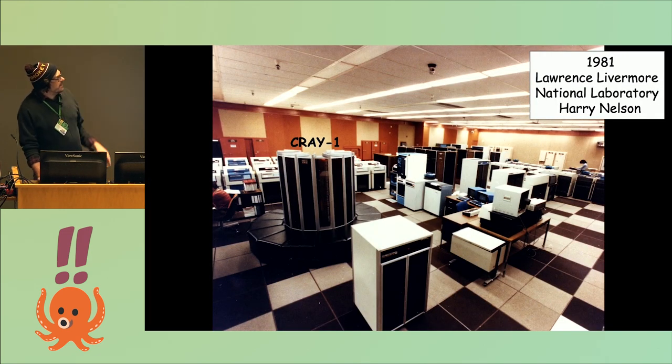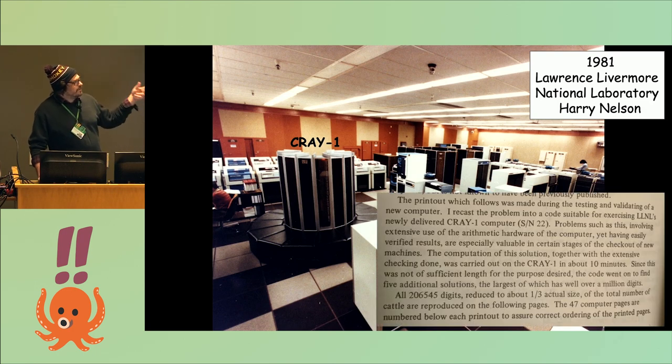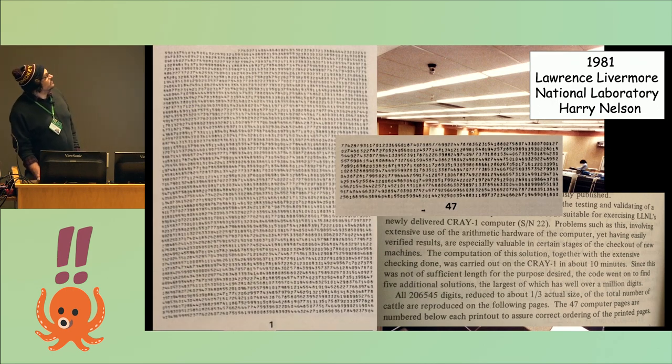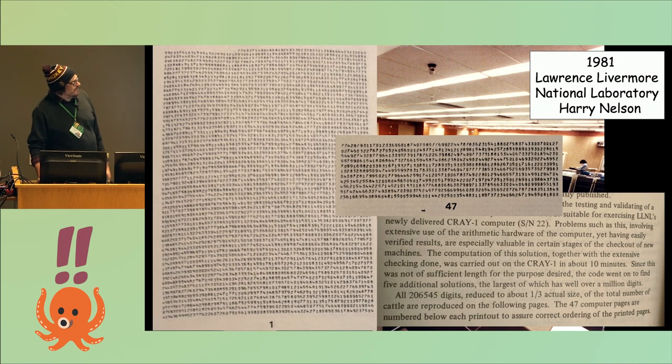Then in 1981 they get this new Cray-1 computer and they're like, hey, we got a new computer. Let's make sure that things are set up right by just solving Archimedes cattle problem. They compute the digits and do all the verification. It takes about 10 minutes. Then this Harry Nelson guy is like, hey, it's never been published before so might as well just publish what the solution looks like on 47 pages where the digits are like one third of actual size.